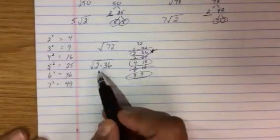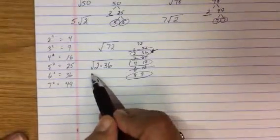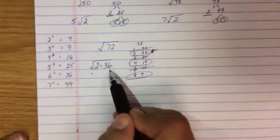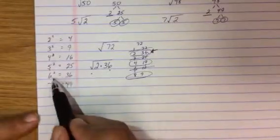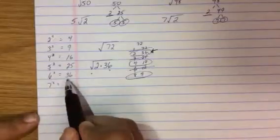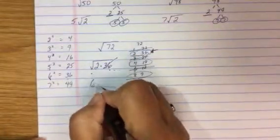Now I look at this. Can I square root 2? No. But can I square root 36? I sure can because I took square root of 36. I'm going to get 6. So the final reduced answer, radical 72 is the same as 6 radical 2.